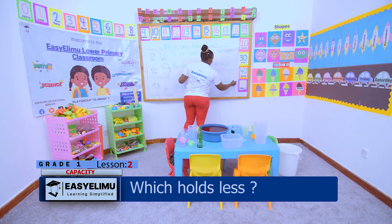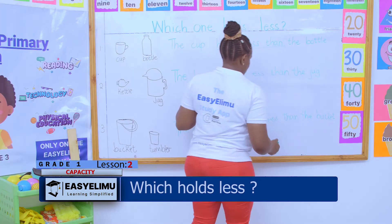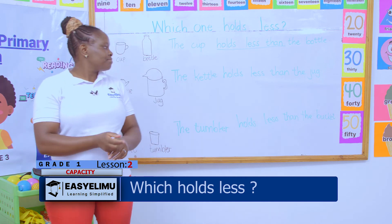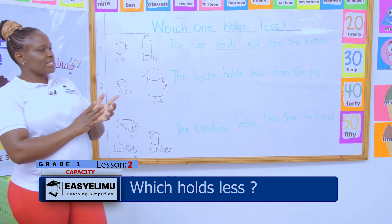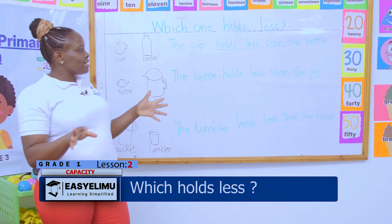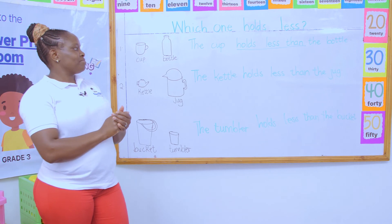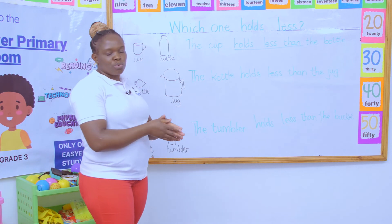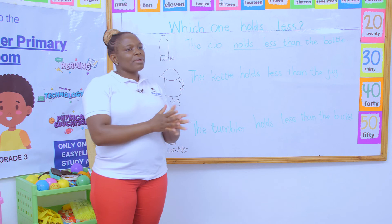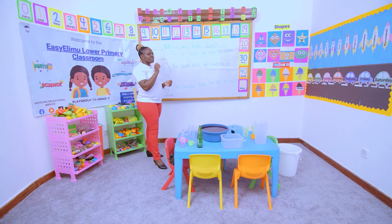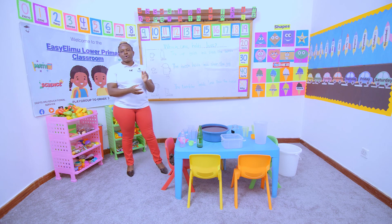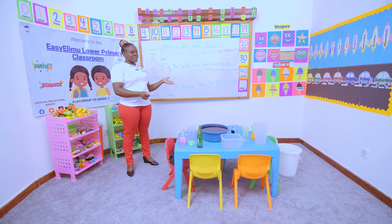So when you go home today in the evening, I want you to go and measure the size of the jug — compare it with your cup, the one you use for taking tea. There is the black plastic drum that is always in the kitchen with water — compare it with the bucket and tell me which one holds less or which one holds more. You compare the mug mommy uses for taking tea with your cup and tell me which one holds less and which one holds more. It was nice having you around — I wish you well and hope to see you in the next lesson.